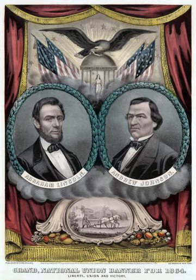The convention's temporary chairman, Robert Jefferson Breckenridge of Kentucky, explained that he could support Lincoln on this new ticket for the following reason: "As a union party I will follow you to the ends of the earth, and to the gates of death. But as an abolition party, as a Republican party, as a Whig party, as a Democratic party, as an American-know-nothing party, I will not follow you one foot."